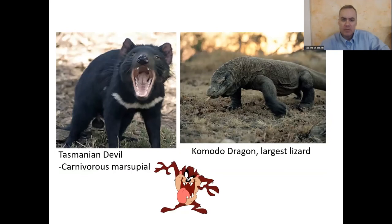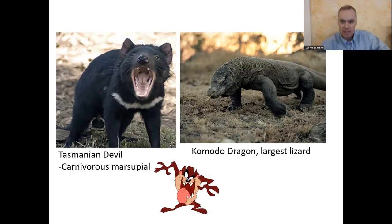There's an island off the coast of Australia called Tasmania — home of the Tasmanian devil, like the cartoon, which is also a marsupial and is carnivorous. Speaking of which, you can actually get kangaroo meat burgers in Australia. Kangaroos are not endangered — there are lots of them — and some people farm them and produce meat from kangaroos.